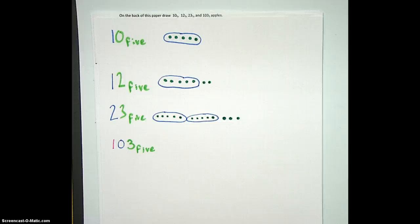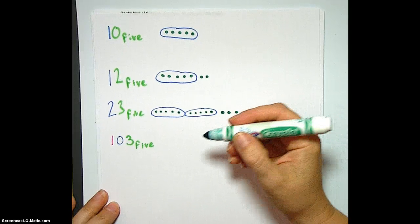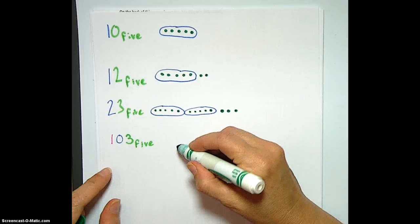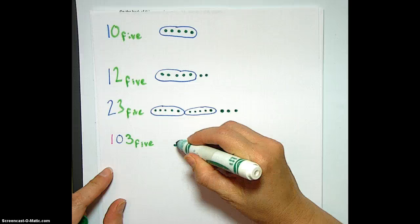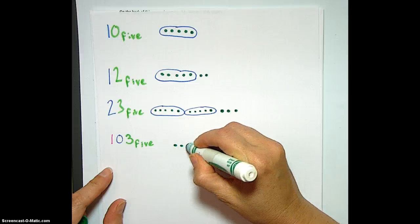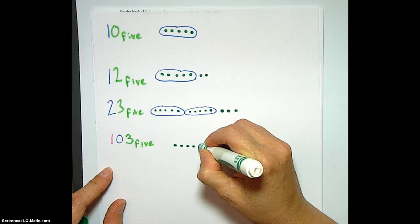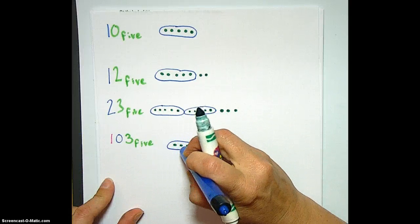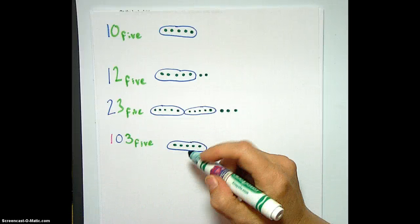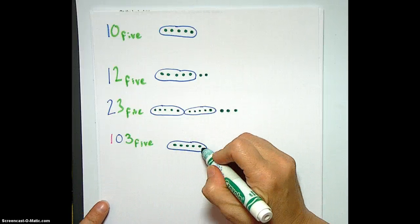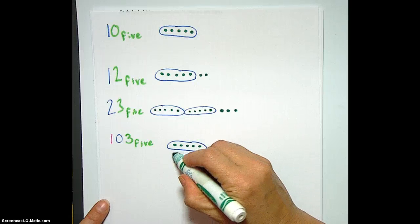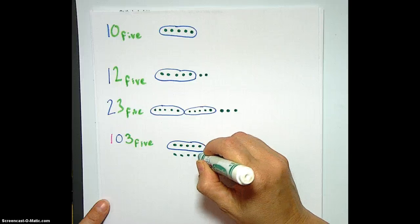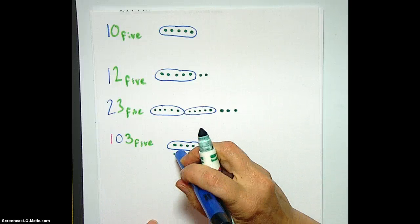Let's just start drawing apples and see what happens. So 103 base 5. Let's just start going and count. 1, 2, 3, 4, 10 base 5. Let's keep going because we're not big enough yet. It's definitely a bigger number. 1, 2, 3, 4, 10 base 5. 11, 12, 13, 14, 20 base 5.